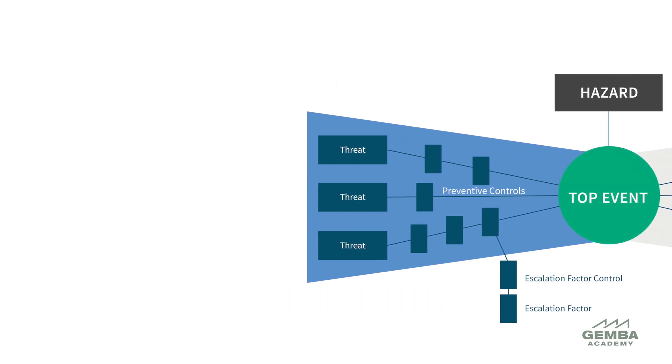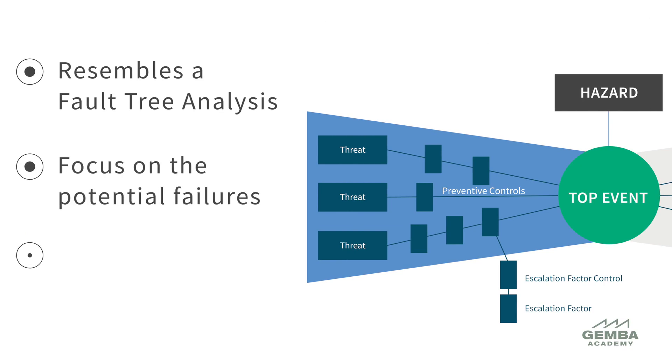The left threat side of a bowtie analysis is essentially a basic version of a fault tree analysis. This is where we focus on the potential failures and identify how a hazardous event might unfold.